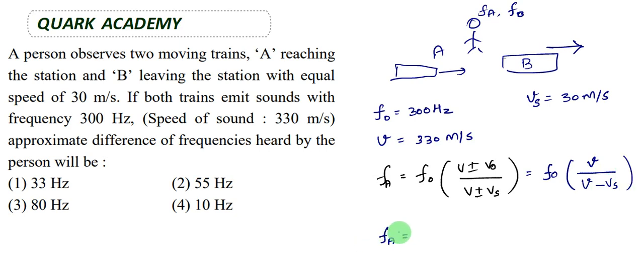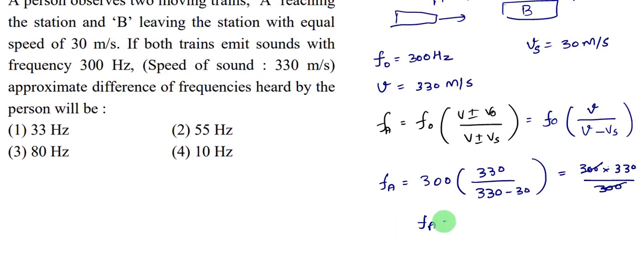Let's substitute the frequency of train A listened by the observer. Fa equals F0 times V over V minus Vs. This is 300 Hertz times 330 over 330 minus 30. 300 into 330 divided by 300, so 300 cancels. We have Fa equal to 330 Hertz. It is the frequency of train A observed by the observer.